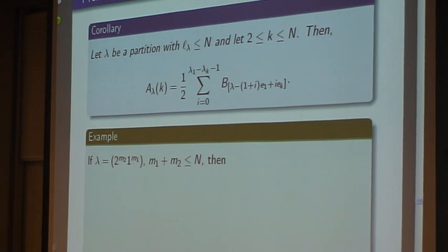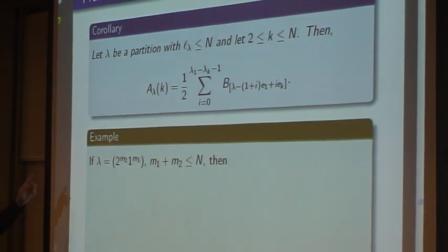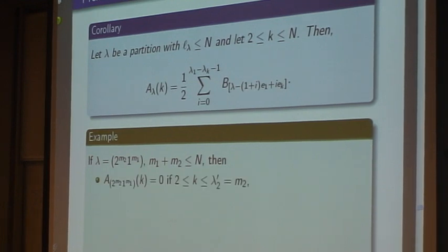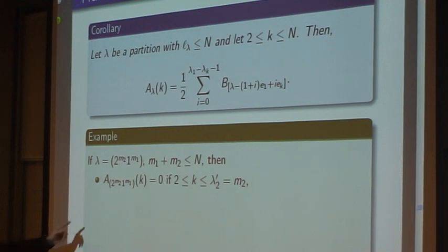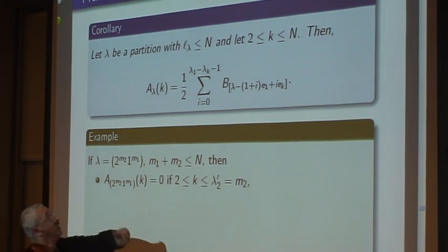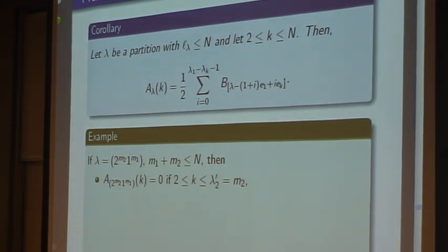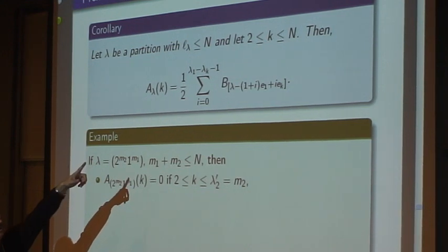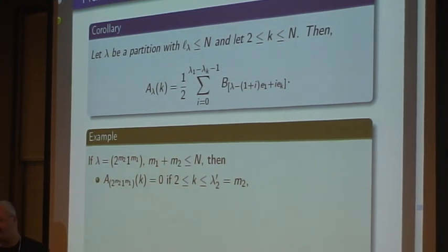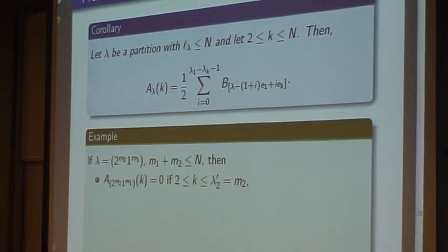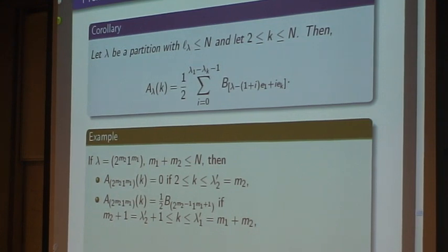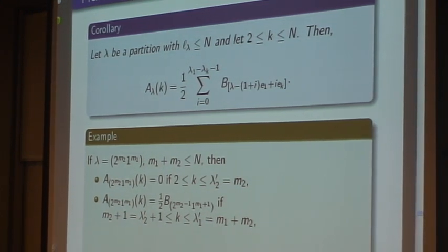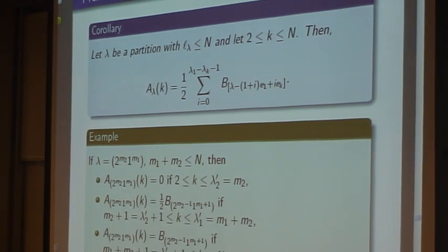Here's an example. Let us take lambda as (2^{m2}, 1^{m1}), this is the last result in this area by Sergey. If we take lambda m2 2's and m1 1's, we get A equals zero when k is between 2 and m2. Let us look at the corollary and see what is λ_1. λ_1 is 2, λ_k is 2, 2 minus 2 minus 1 is minus 1, that means it's 0 and it's 1. If k is between m2 plus 1 and m1 plus m2, it's easy to see it's only one possibility, it's half of the integral. And here we have two possibilities, that's it.